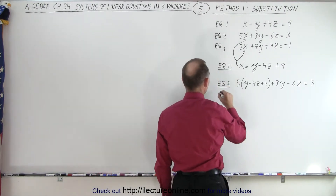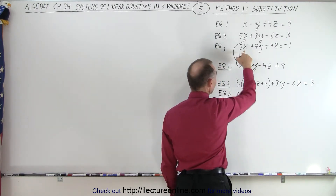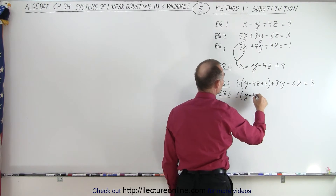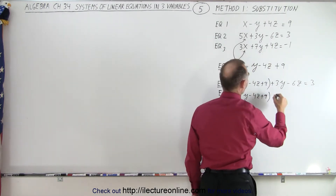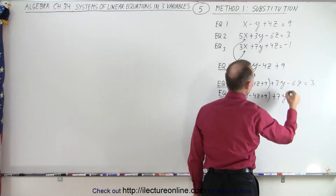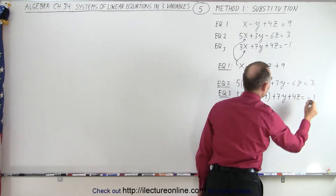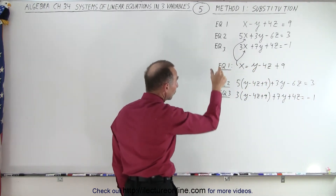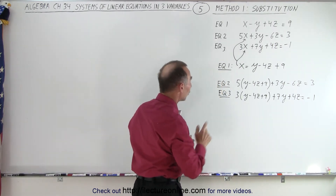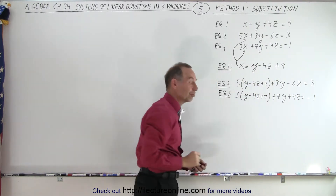Now I take the third equation, equation three, and write three times, instead of x, I write y minus 4z plus 9. Then I have plus 7y plus 4z is equal to negative 1. You have to be very careful about copying the equation exactly, but only making the one substitution — instead of x, we write what x is equal to from our first equation.